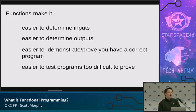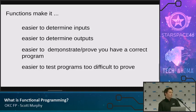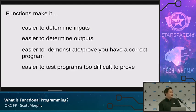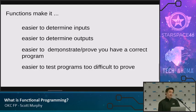Functional programs make it easier to write correct code because it makes it easier to determine what's coming into your program, what's going out of your program. It's easier to demonstrate that your program is correct, either in the form of a proof or just casually walking someone through it, because you have inputs and outputs. It becomes much easier.